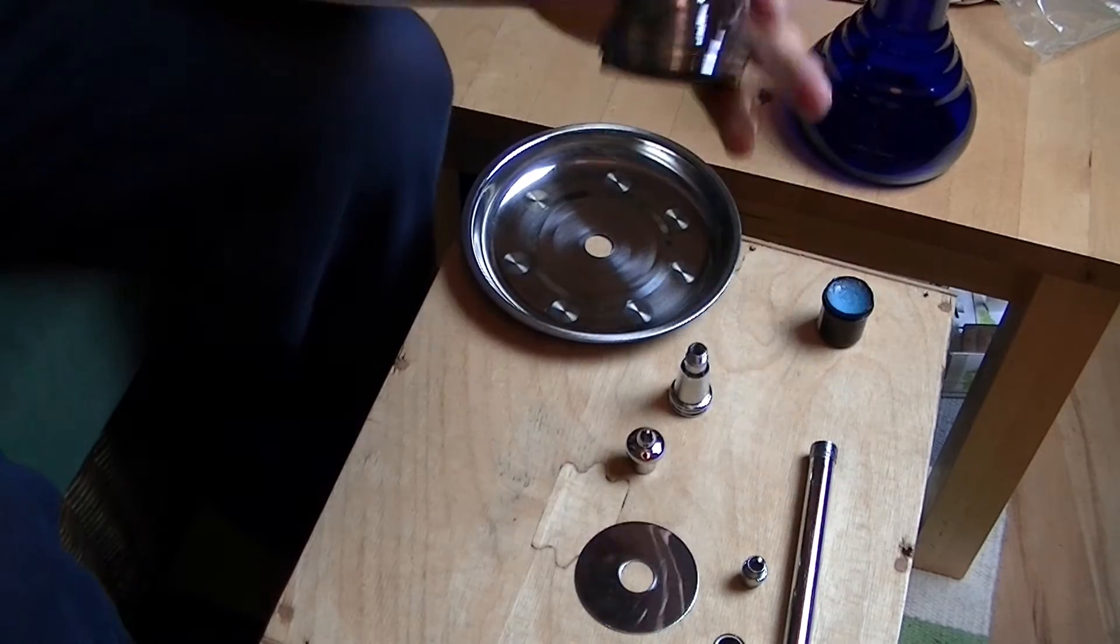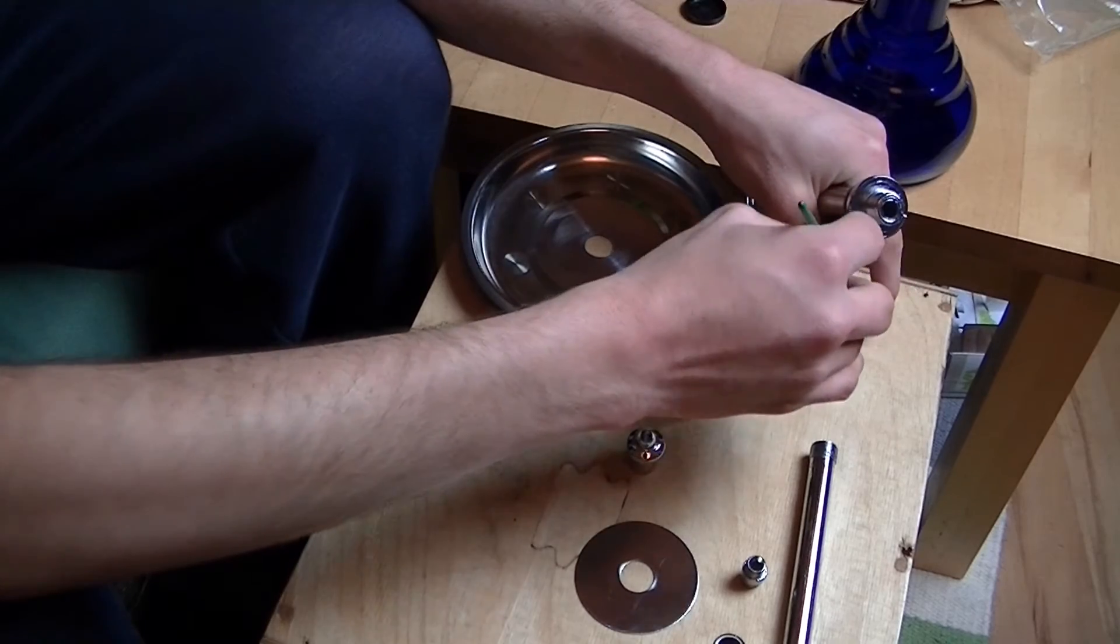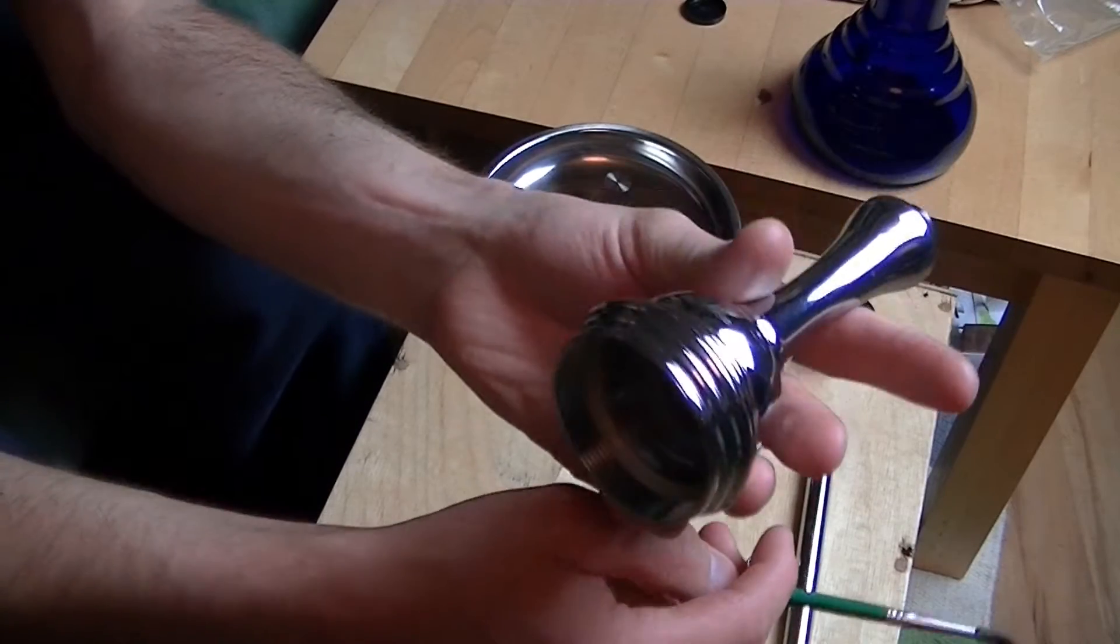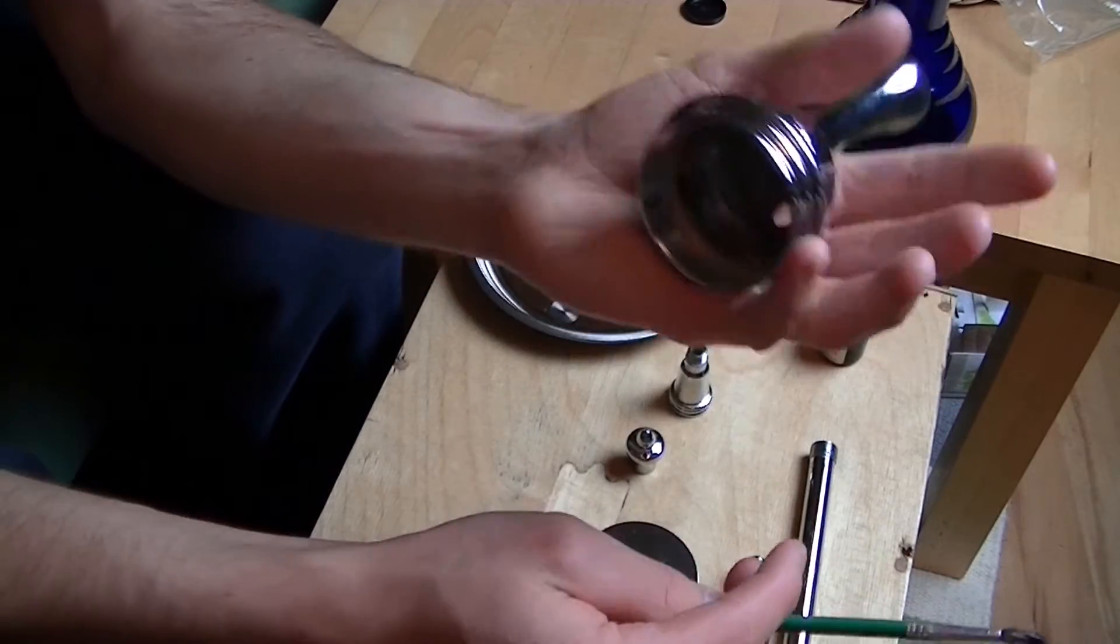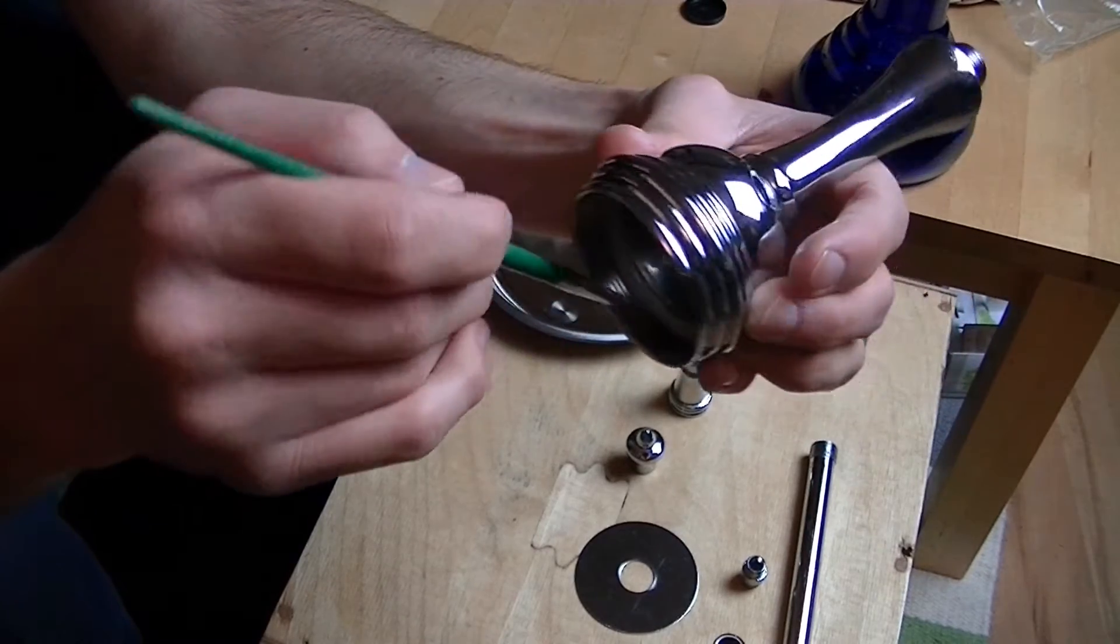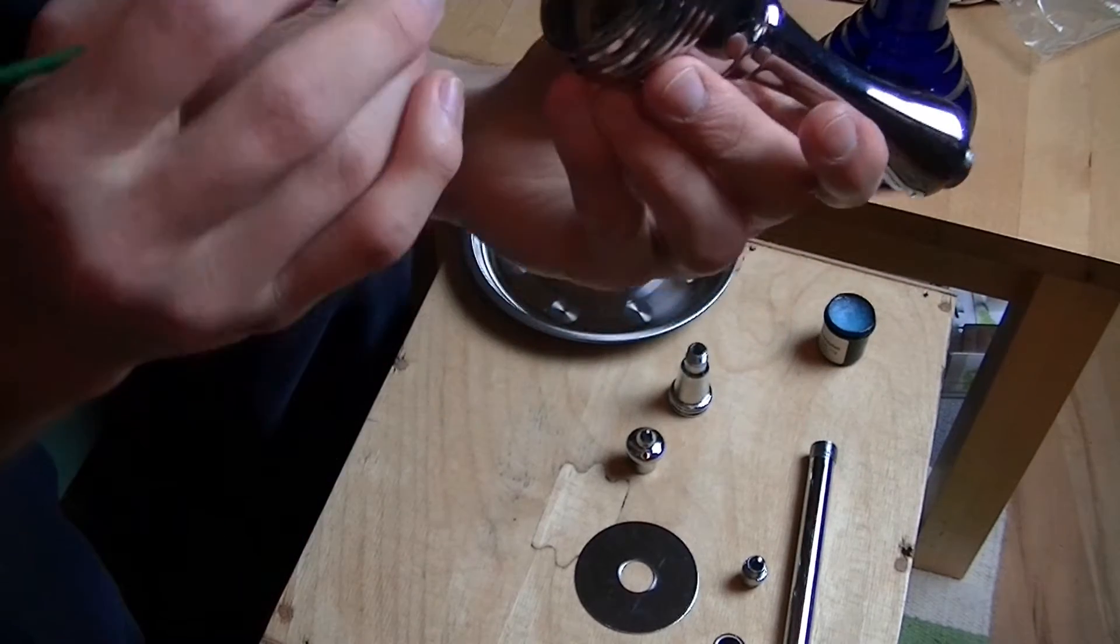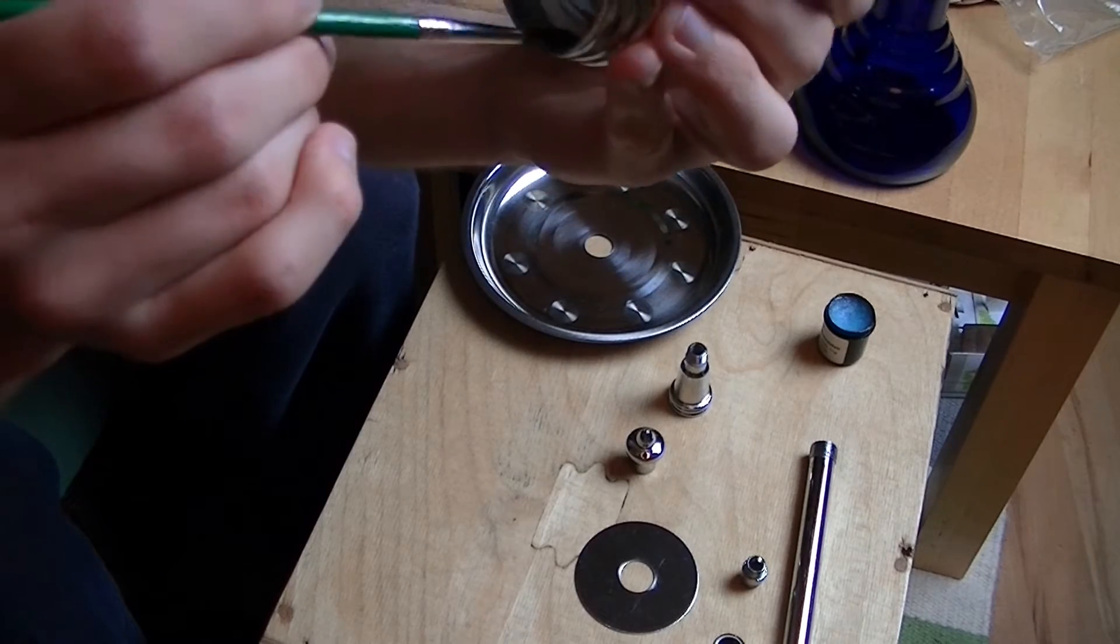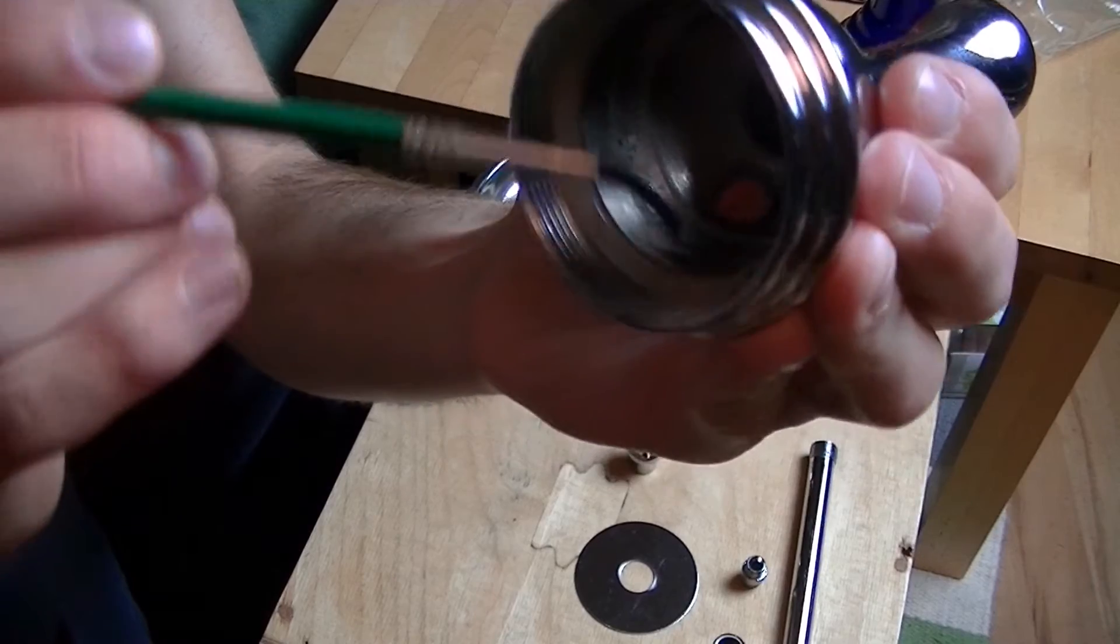Einfach einmal so drüber ziehen überall, und somit ist die Base schon mal fertig. Dann macht ihr das ganze, könnt ihr euch einfach irgendein nächstes Teil greifen was ein Gewinde hat. In dem Fall mache ich das jetzt hier mit der Base beziehungsweise Rauchsäule. Geht ihr wieder her und fettet die Gewinde, das Innengewinde hier ein, einmal einfach rum, so hier an der Innenseite entlang, einmal im Kreis.